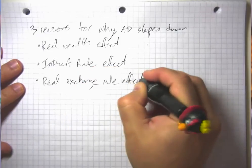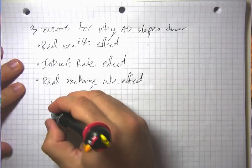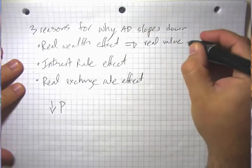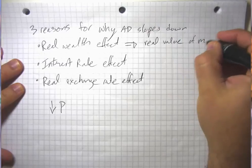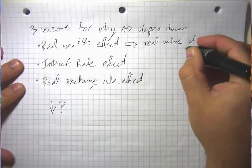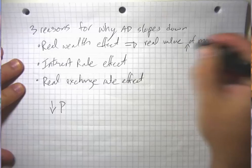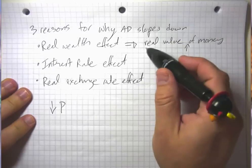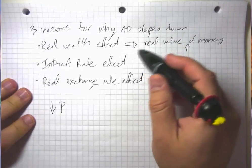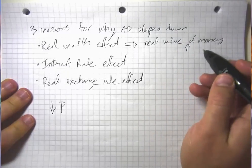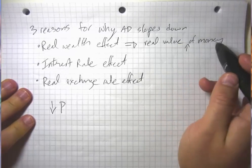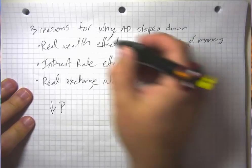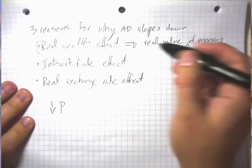Normally when there's a decrease in the price level, the real value of people's nominal money holdings goes up, so when there's a decline in the price level, people are wealthier and therefore they spend more. But this assumes that people have positive net assets. If people have a very high level of debt, then although the real value of their money goes up, the real value of their debts also goes up. So this effect would become weaker when we have high levels of debt.